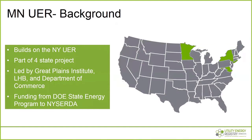For utilities, the registry would streamline what is surely a stream of multiple different community-level energy data requests, sometimes asking for different things. The utility energy registry was first developed in New York State in response to similar community interest in energy data. This particular project is a four-state initiative with DOE State Energy Program grant support. Minnesota is joined with New York State, Maryland, and the District of Columbia to develop the next iteration of the registry. Minnesota will have a state working group made up of utilities, community leaders, and other interested stakeholders.